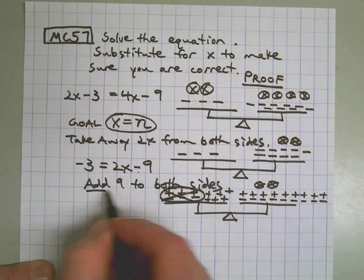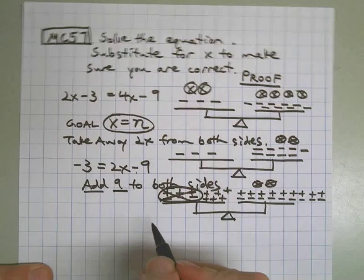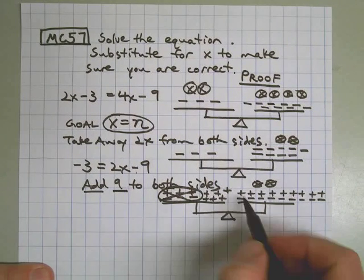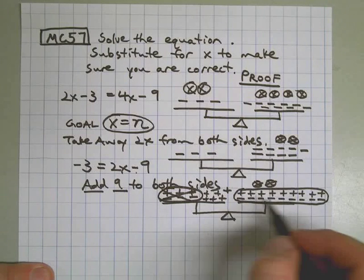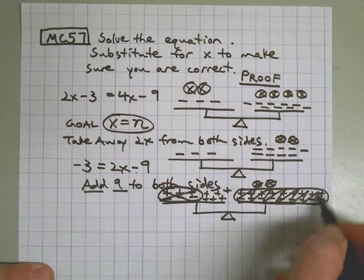Remember, I said add 9 to both sides. That's the key, is doing this thing to both sides. What I have over here is a bunch of 0 pairs. That's a neutral field, which means that's 0.